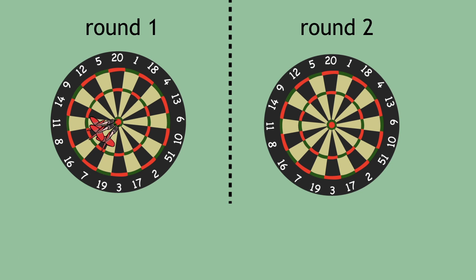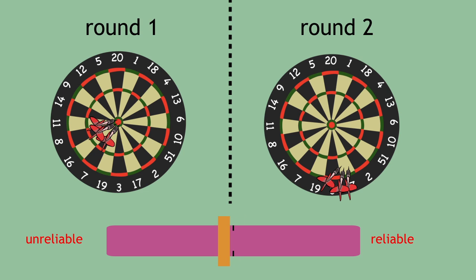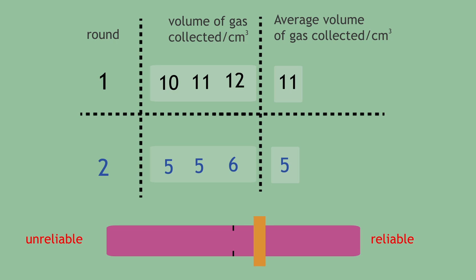The answer is that your dart throwing ability across these two rounds unfortunately has got worse and was not reliable. Your experimental results are also unreliable.